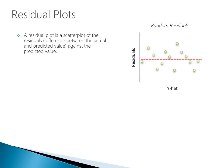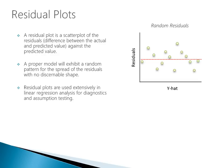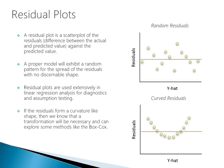A residual plot is a scatter plot of the residuals — the difference between the actual value of y and the predicted value of y — plotted against the predicted value. A proper model will exhibit a random pattern for the spread of the residuals with no discernible shape. Residual plots are used extensively in linear regression analysis for diagnostics and assumption testing. For example, if the residuals form a curvature-like shape, then a transformation will be necessary, and we can explore methods like the Box-Cox transformation.